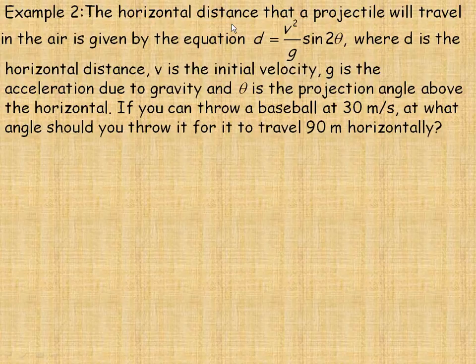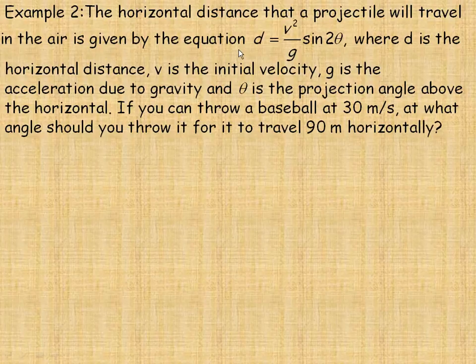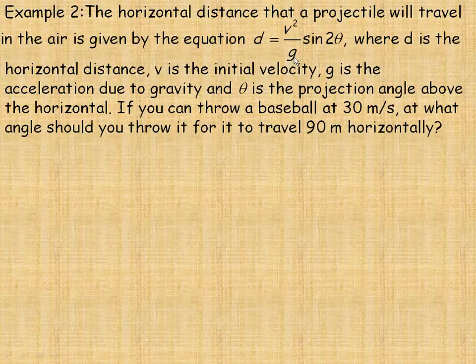In example 2 here, we're given that the horizontal distance that a projectile will travel in the air is given by this equation. The distance equals the initial velocity squared divided by the acceleration due to gravity times the sine of twice the angle.